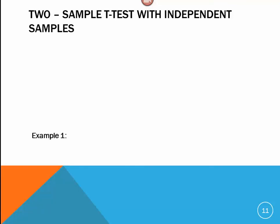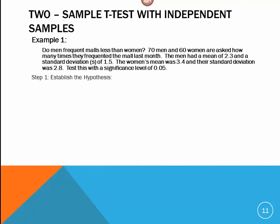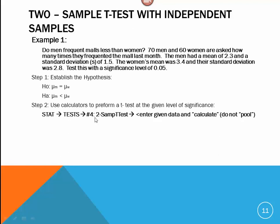So, let me go through this here. As you were doing it, we used our calculators to perform this. We went stat and then highlighted test. Choice number 4. Two sample t-test. We entered our given data and we hit calculate and we did not pool in this scenario.